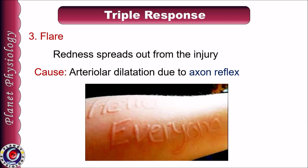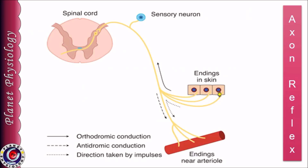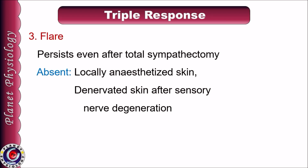Wheal is followed by diffuse spreading of redness in the surrounding area — called flare. Flare is caused by dilation of arterioles due to axon reflex, where signals from the painful region of skin travel along nerve fibers to their first branching point and then antidromically to the arterioles. This is called a pseudo-reflex as no center is involved, and the neurotransmitter released is substance P. Flare persists even after total sympathectomy but is absent in locally anesthetized or denervated skin, indicating it is brought about by sensory nerve fibers.